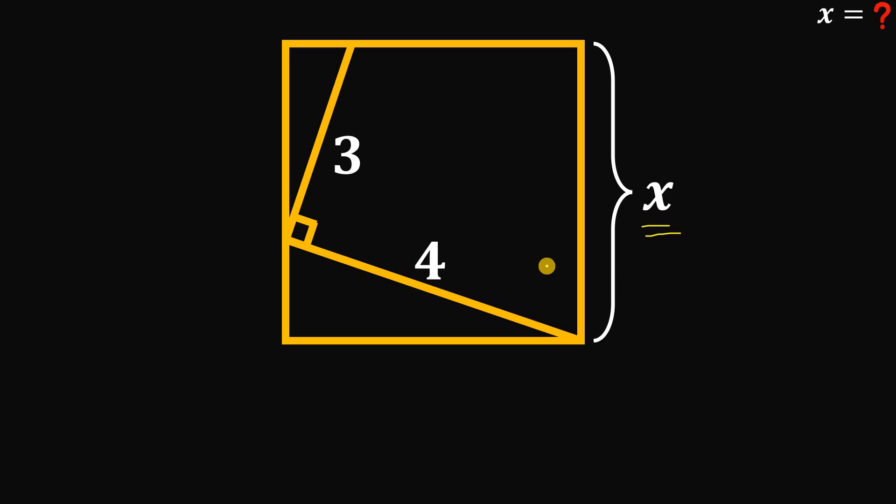So one thing to notice here is we have two similar triangles. Now here they are. If we let this angle be equal to alpha and this angle be equal to beta, this angle is also alpha and this is beta and this is beta. Meaning these two right triangles are similar to each other.